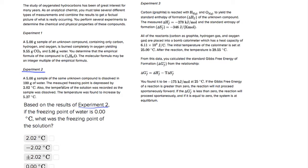They tell us in this experiment two that the measured freezing point is depressed by 2.02 degrees Celsius. So here's all the information we need. To depress something means to lower it. So if it's normally zero, we want to lower it by 2.02.